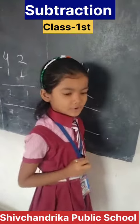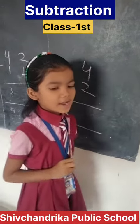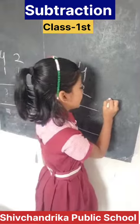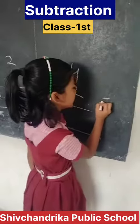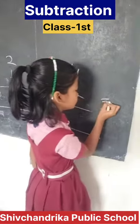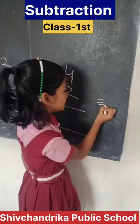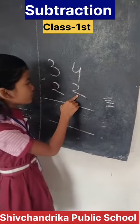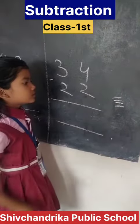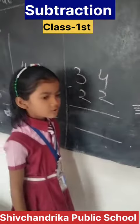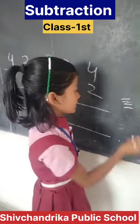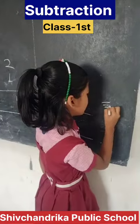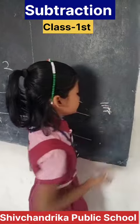So I draw four lines. One, two, three, four. This is two numbers, so I lay two lines. One, two.